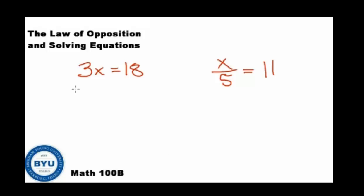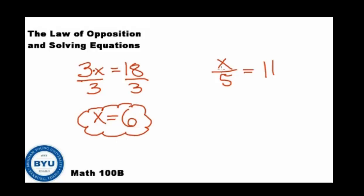Here we have 3x equals 18. We need to understand the operation — 3x really means 3 times x equals 18. Applying the law of opposition, what is the opposite of times by 3? The opposite is to divide by 3. If we apply that to both sides, dividing by 3 gives us 3 over 3, which leaves us with x. And 18 divided by 3 is 6. Over here we have x divided by 5 equals 11. What's the opposite of divide by 5? Multiply by 5. When we multiply both sides by 5, we're left with x equals 11 times 5, which is 55. This is the law of opposition and how it's applied in mathematics.